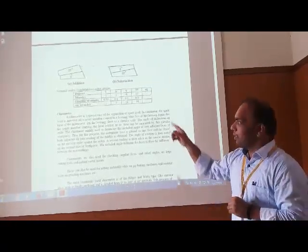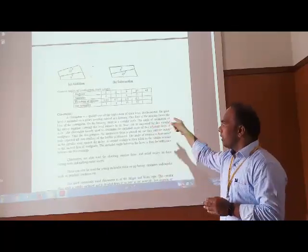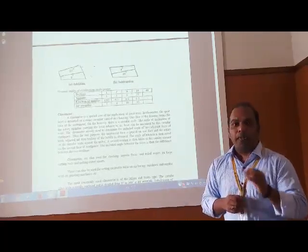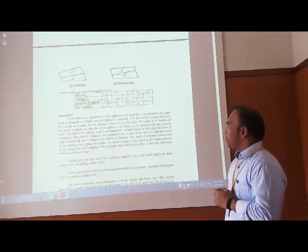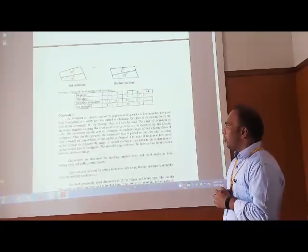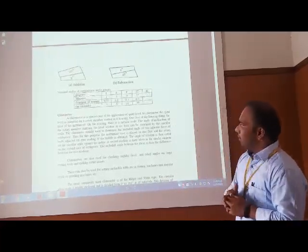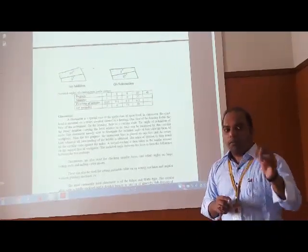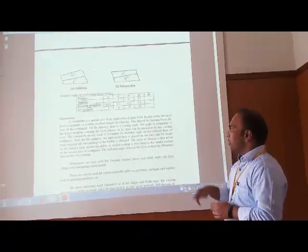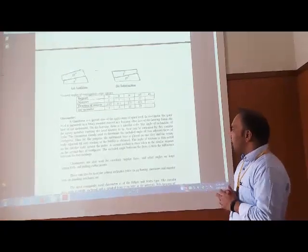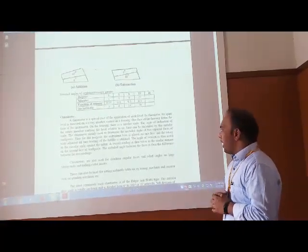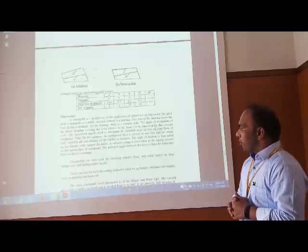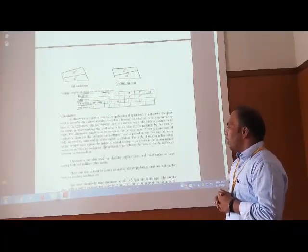Moving to the next very interesting instrument in the angular measurement segment, that is clinometer. A clinometer is a special case of application of spirit level. In clinometer, the spirit level is mounted on a rotary member carried in a housing. One base of the housing forms the base of the instrument. On the housing there is a circular scale. The angle of inclination of rotary member carried level relative to its base can be measured by this circular scale. Thus for this purpose, the instrument base is placed on one surface, a reading is taken. A second reading is then taken in similar manner on the second face of the workpiece. The angle between the faces is then the difference of the two readings.